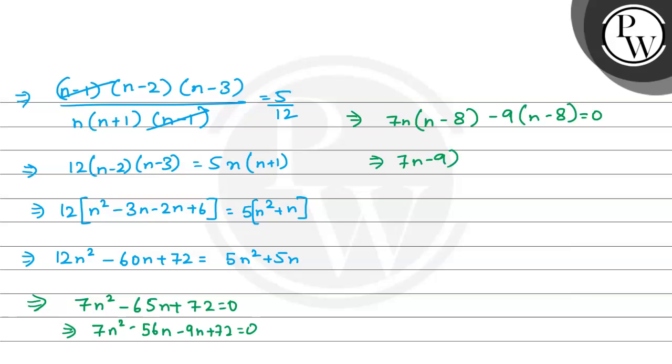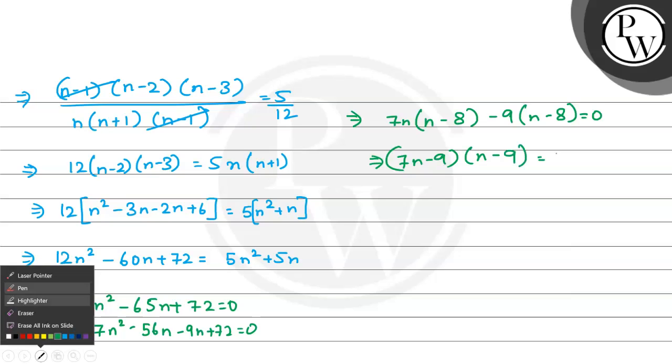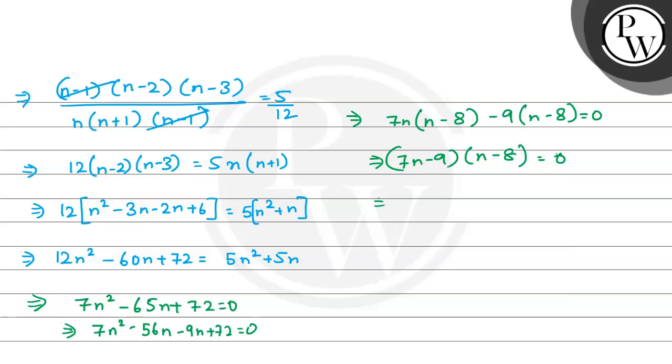The factors become 7n minus 9 and n minus 8. So 7n minus 9 equals 0, which gives n equals 9 by 7, and n minus 8 equals 0, so n equals 8. The final answer is n equals 8. I hope you understood it well.